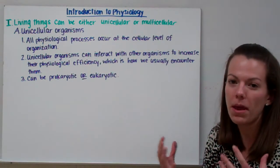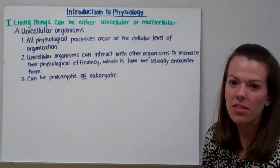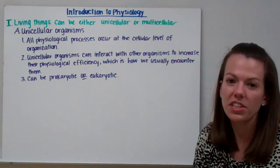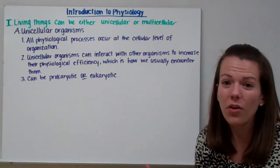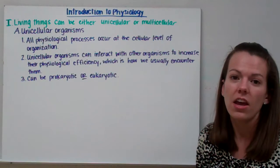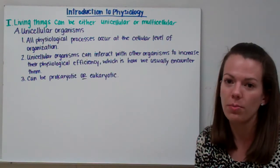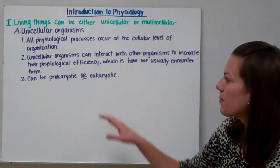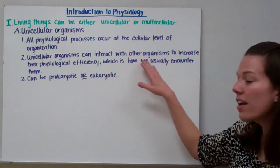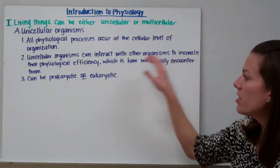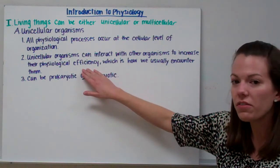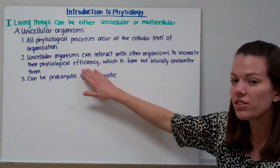Because unicellular organisms are only made of one cell, their cell can't be specialized for particular jobs — that one cell has to do everything needed to maintain homeostasis. However, unicellular organisms can interact with other organisms to increase their physiological efficiency.